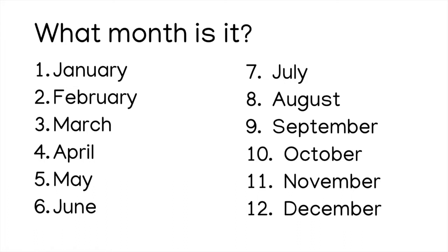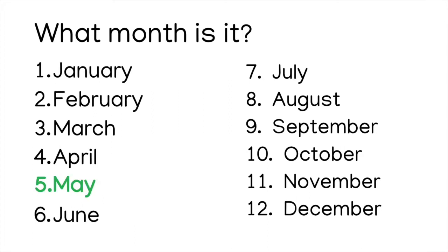What month is it? One, January. Two, February. Three, March. Four, April. Five, May. Six, June. Seven, July. Eight, August. Nine, September. Ten, October. Eleven, November. Or twelve, December. May. It is May.